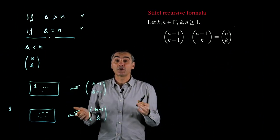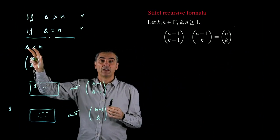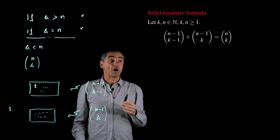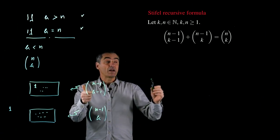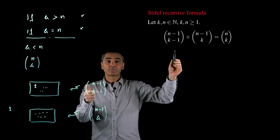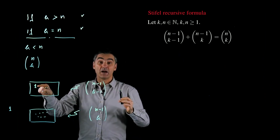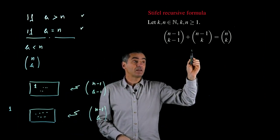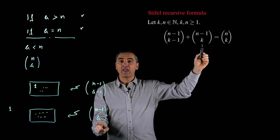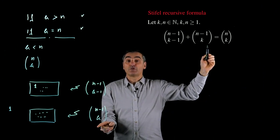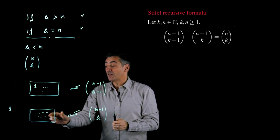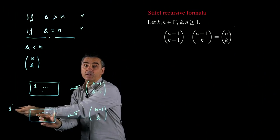is equal to n minus 1 over k minus 1, which is the number of possible choices with 1 inside my box, plus n minus 1 over k, which is the number of possible choices of k numbers with 1 outside my box.